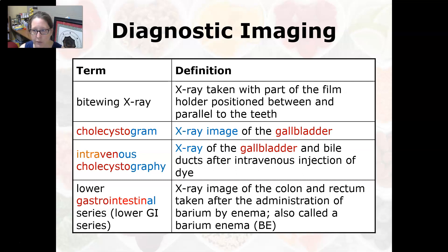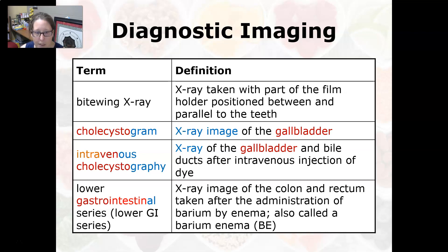Moving to diagnostic imaging: a bitewing X-ray is an X-ray taken with part of the film holder positioned between and parallel to the teeth, used to get X-rays of the teeth and the bone around the teeth. A cholecystogram is an X-ray image of the gallbladder.